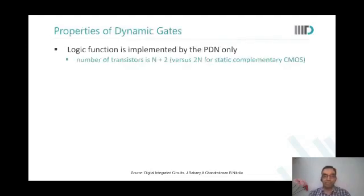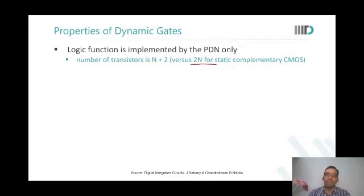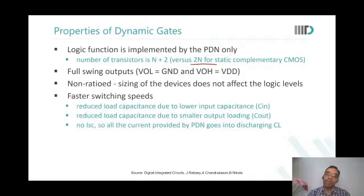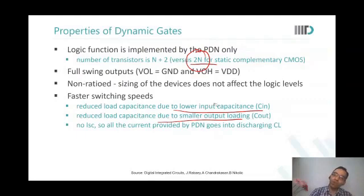The properties of dynamic gates: the total number of transistors is n plus 2 versus 2n for static CMOS. You get full swing outputs, non-ratio sizing. As you reduce the number of transistors that an input goes to, you reduce the logical effort. There is reduced input capacitance and reduced output capacitance, so overall delays are expected to be less.